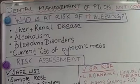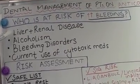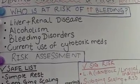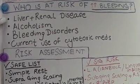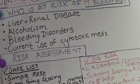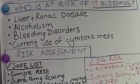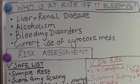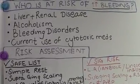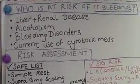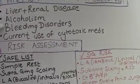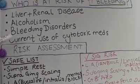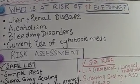Who is really at risk of increased bleeding? These can be patients who have any kind of liver or renal disease. Liver disease, because the liver is the part of the body that makes the clotting factors that stop bleeding — so if the liver is severely damaged, it can cause increased bleeding. With renal disease, the kidneys affect platelet function, so there may be increased bleeding because the platelets won't function properly. Alcoholism also affects the liver and can cause liver damage, which leads to increased bleeding. Then bleeding disorders like hemophilia and von Willebrand disease, and current use of cytotoxic medications also affect clotting.